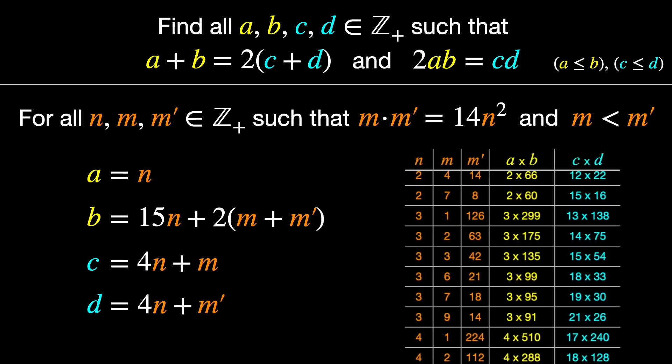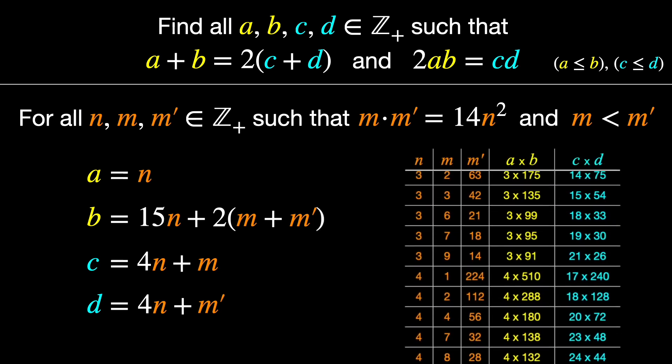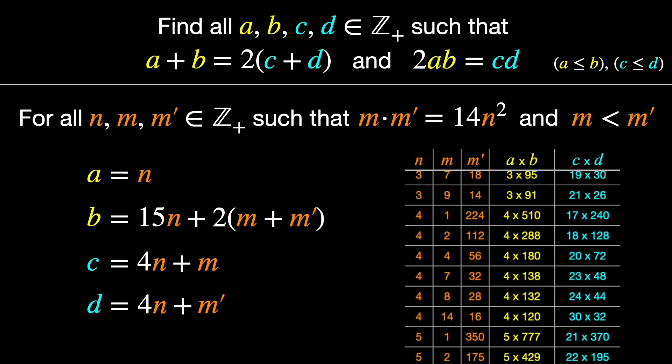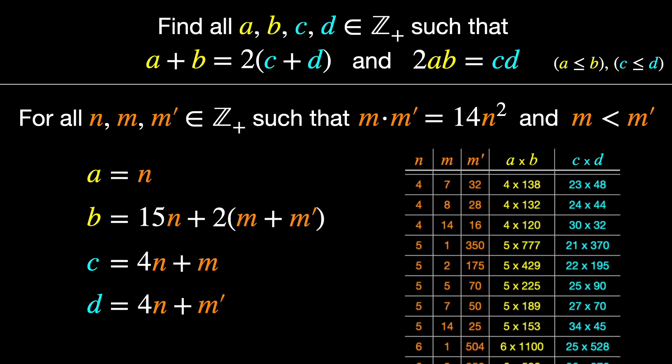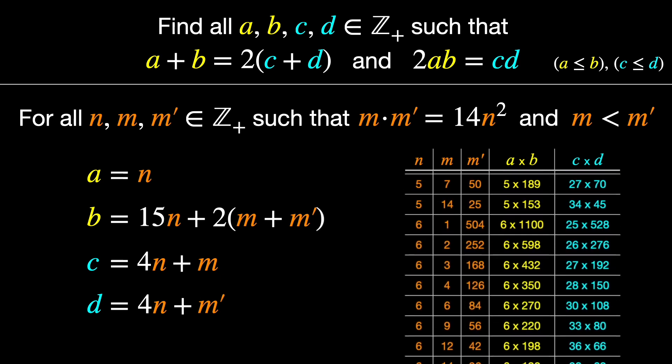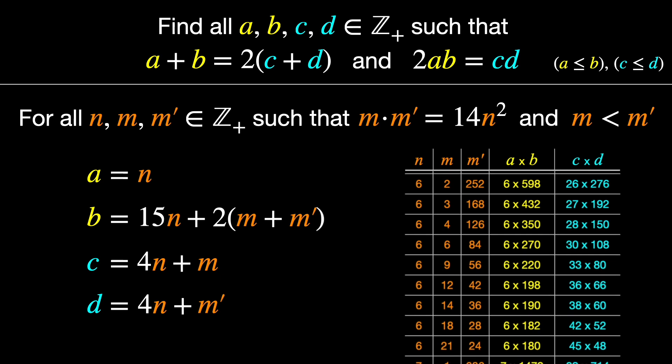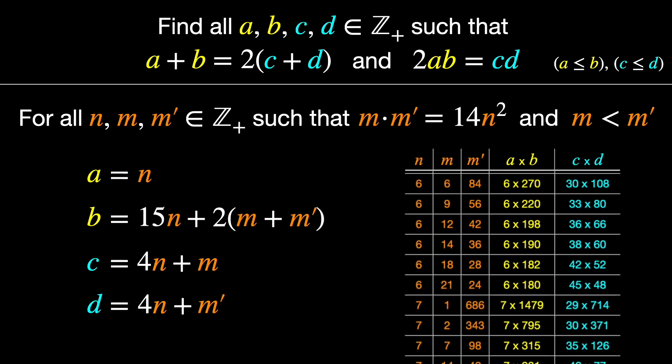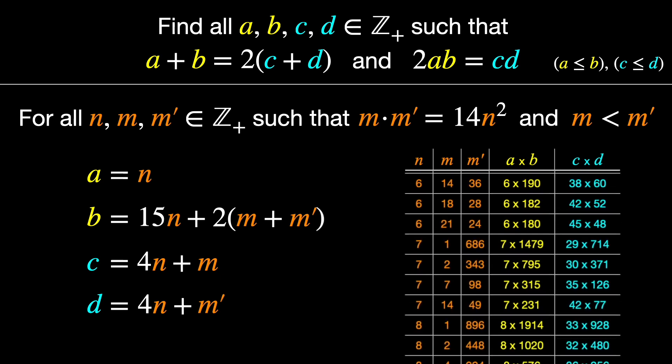Before I go, here's a follow-up question. How would the answer change if instead of twice the perimeter and twice the area, we had three times the perimeter and three times the area? Or four times? Or x times? I don't know the answer. I think I'll go figure that out right now.